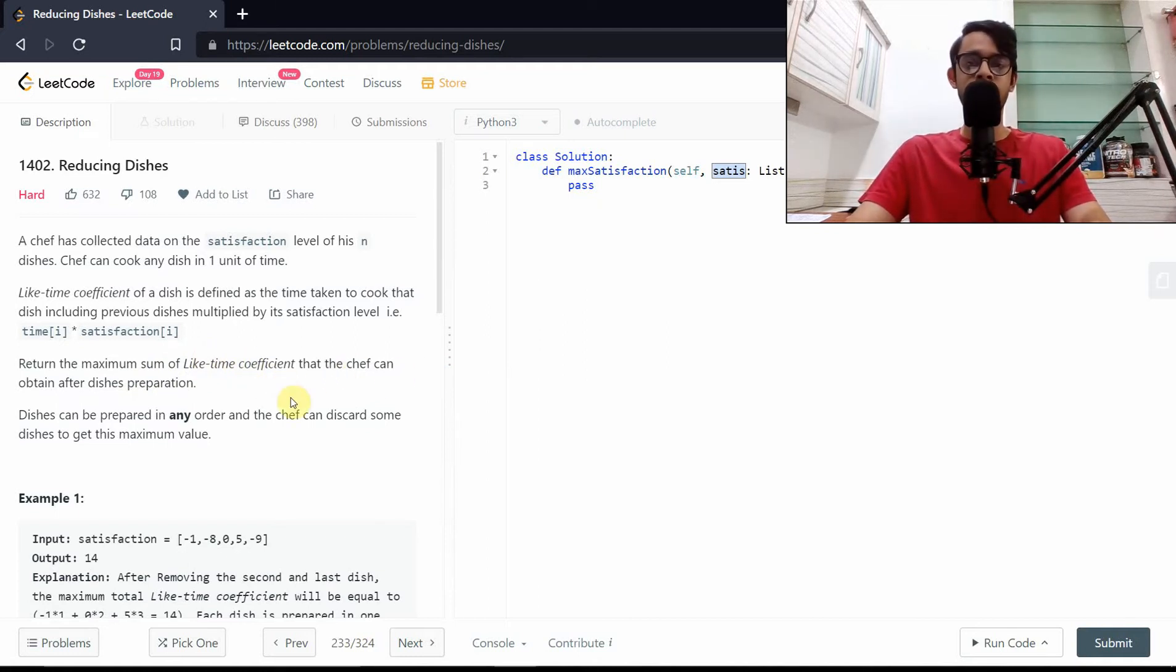There are two more special conditions which make this problem very interesting. First, dishes can be prepared in any order. The ordering is not important. The values and the times are, but the ordering of dishes themselves in the satisfaction array is not important. Then the chef can also discard some dishes to gain the maximum value.